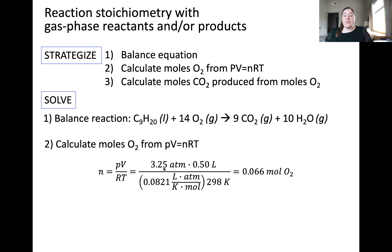Importantly, pressure is in units of atmosphere, volume is in liters, and temperature is in Kelvin. If these values were given in different units, you would need to convert them to the appropriate units based on the units of the ideal gas constant. When calculating the number of moles of oxygen, I got a value of 0.066 moles of oxygen.